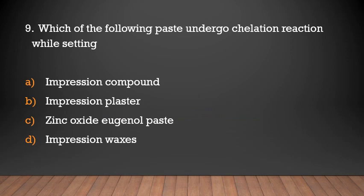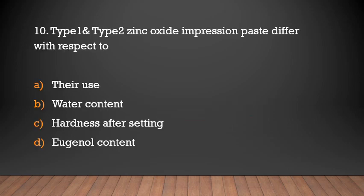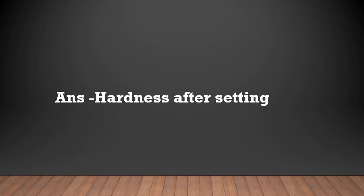Which of the following paste undergoes chelation reaction while setting? Options: impression compound, impression plaster, zinc oxide eugenol paste, impression waxes. Answer: Zinc oxide eugenol paste. Type 1 and Type 2 zinc oxide impression paste differ with respect to hardness after setting.